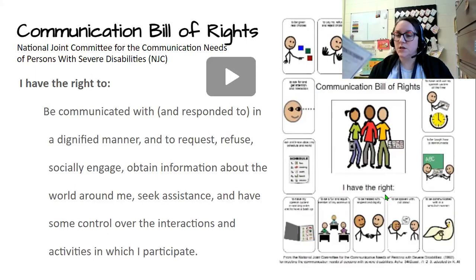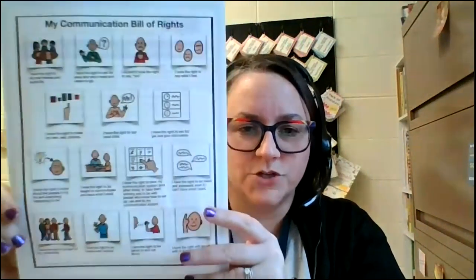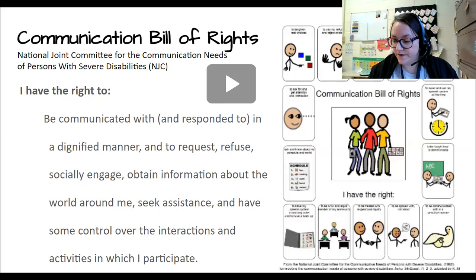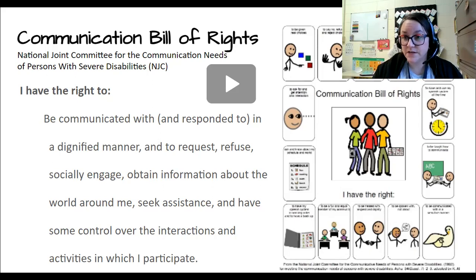The Communication Bill of Rights — if you look in your folder, you should have a copy. On one side it's all in text; on the other side it has a version with some symbol support. The Communication Bill of Rights is a document developed at the National Joint Committee for the Communication Needs of Persons with Severe Disabilities. It basically states that all people with a disability of any extent or severity have a basic right to affect, through communication, the conditions of their existence — including the right to be communicated with in a dignified manner, to request, refuse, socially engage, obtain information, seek assistance, and have control over the interactions in which they participate.